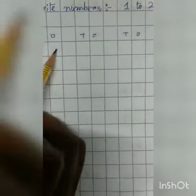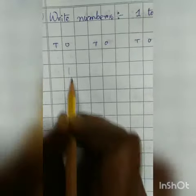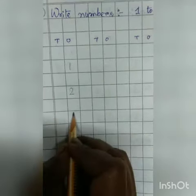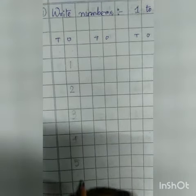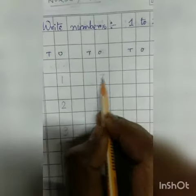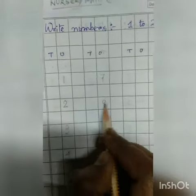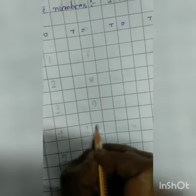You have to leave one box and write the numbers. First: one, two, three, four, five, six — leave a box — seven, eight, nine. Then ten: zero is in the ones box and one is in the tens box.